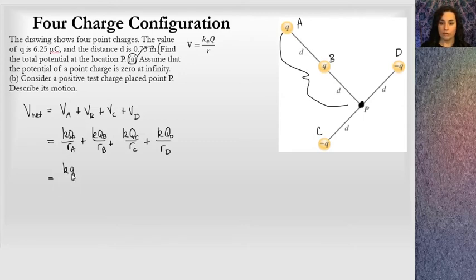So let's put in what we know in terms of D and Q. For A, we have KQ over 2D, and this will be a positive value. For B, we also have a positive charge. We have KQ, and its distance from this point P is only 1D.